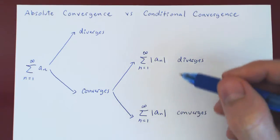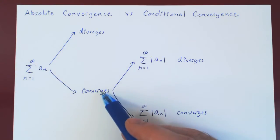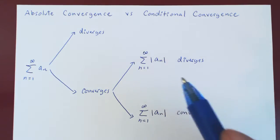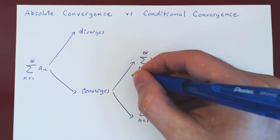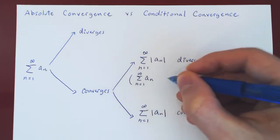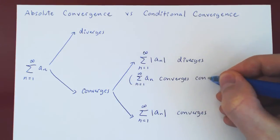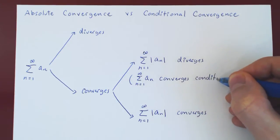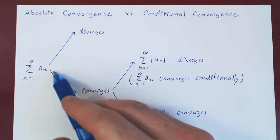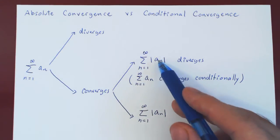So what name do we give in each case? If we reach this point, it means that the initial series converges but the series of the absolute value of the terms diverges. This is what we call conditional convergence — the series itself converges, but the series of its absolute values diverges.